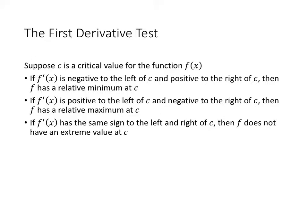Consider the example where the function was decreasing, leveled out so the derivative was 0, and then kept decreasing. In that situation, there is a critical value because the derivative is 0 and there is a horizontal tangent line, but there is no maximum or minimum because the derivative did not change sign — it was negative before the critical value and negative again after. The first derivative test says that if the derivative changes sign, either from positive to negative or from negative to positive, then we have an extreme value.